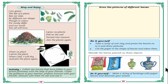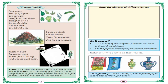Now there is a song: 'I am a green, the life of a plant. See our size, so different of a shape. Though in color we rarely differ and our smell you all will love. I grow on plants, fall on the soil. Turned into manure, join the plants again. When on plant, I serve the plant. When I fall, I will dry and join the plant again.' Manure means this mud and all — leaf becomes manure, which feeds the plant again. It is a circle: plant, leaf, manure, plant.